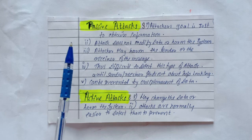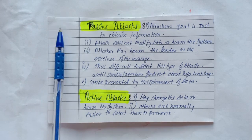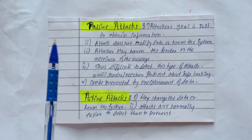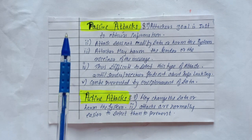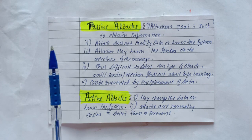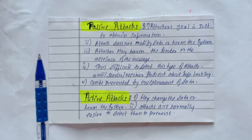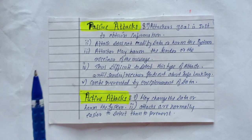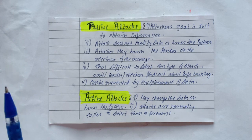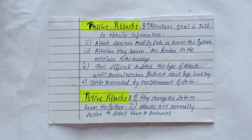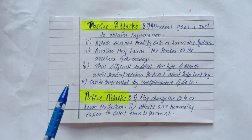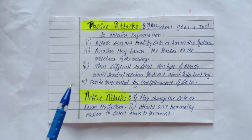Now we will see passive attacks and active attacks. In passive attacks, the attacker's goal is just to obtain information — they do not modify the data or harm the system, and the system continues with its normal operation. However, the attacker may harm the sender or receiver of the message. Attacks that are a threat to confidentiality — snooping and traffic analysis — are passive attacks. These attacks are difficult to detect until the sender and receiver discover the information leakage, and they can be prevented by encipherment of data.